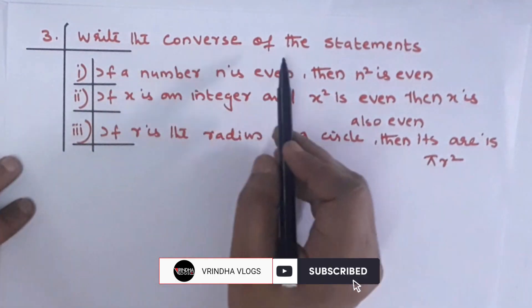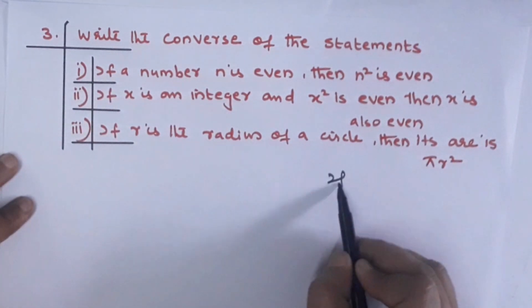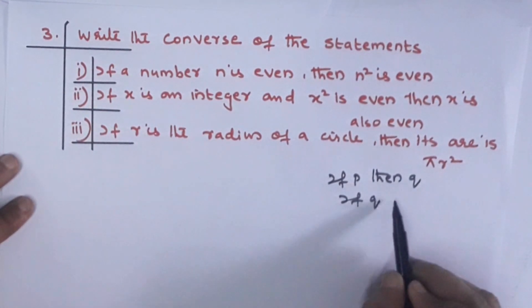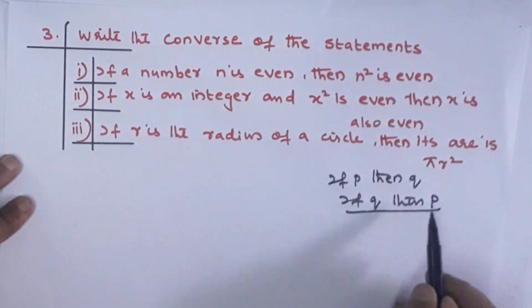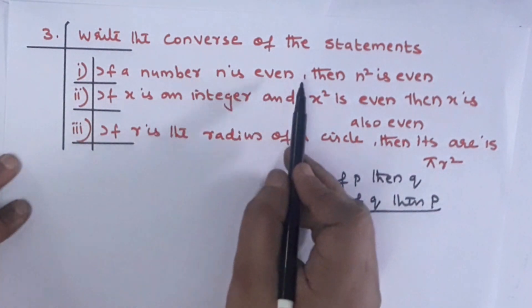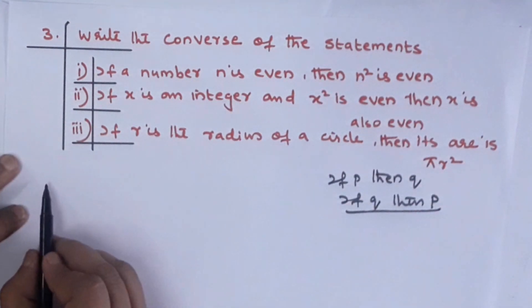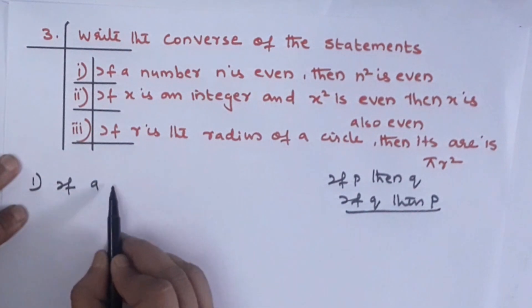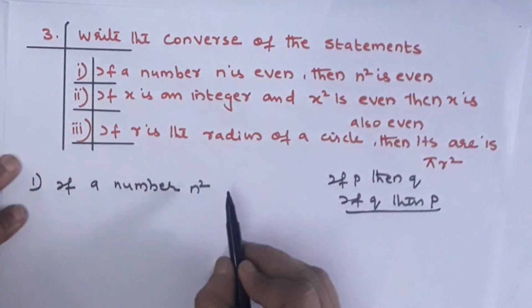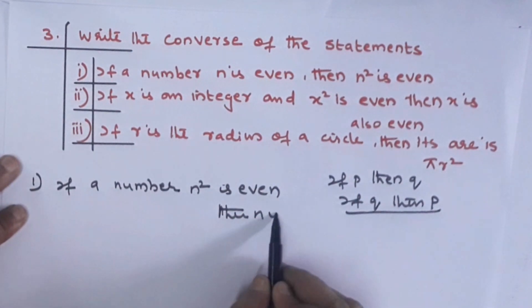Next: Write the converse of the statement. For converse, If P then Q becomes If Q then P. First question: 'If a number n is even, then n squared is even.' Converse: 'If n squared is even, then n is even.'